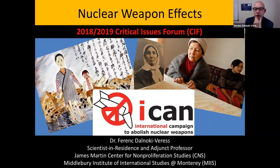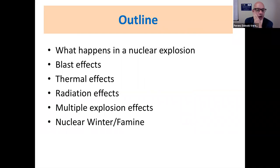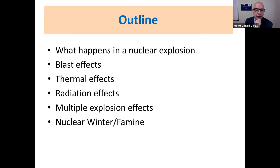On the left side is one of the paintings from Hiroshima or Nagasaki, and on the right side you can see a woman at the Semipalatinsk nuclear test site. I'm going to talk about what happens in a nuclear explosion first, then blast effects, thermal effects, radiation effects, and then nuclear winter and nuclear famine. This is recent research — meaning over the last decade — which really changes our thinking about the effect of nuclear weapons.